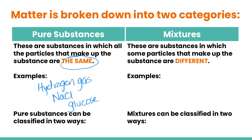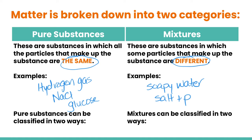The other category is mixtures. These are substances in which some of the particles that make up the substance are different — they're made up of two or more things. An example might be soapy water, which is made up of water and soap. You could also have a mixture of salt and pepper, which would be considered a mixture of both.